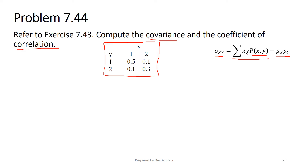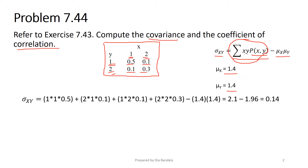Let me show you how to do the summation part. It's: 1 times 1 times their joint probability 0.5, plus 2 times 1 times 0.1, plus 1 times 2 times 0.1, plus 2 times 2 times 0.3. These are the means from Problem 7.43. The full covariance formula gives us: the first part sums to 2.1, and we subtract the product of the means which is 1.96. So the covariance is 0.14.